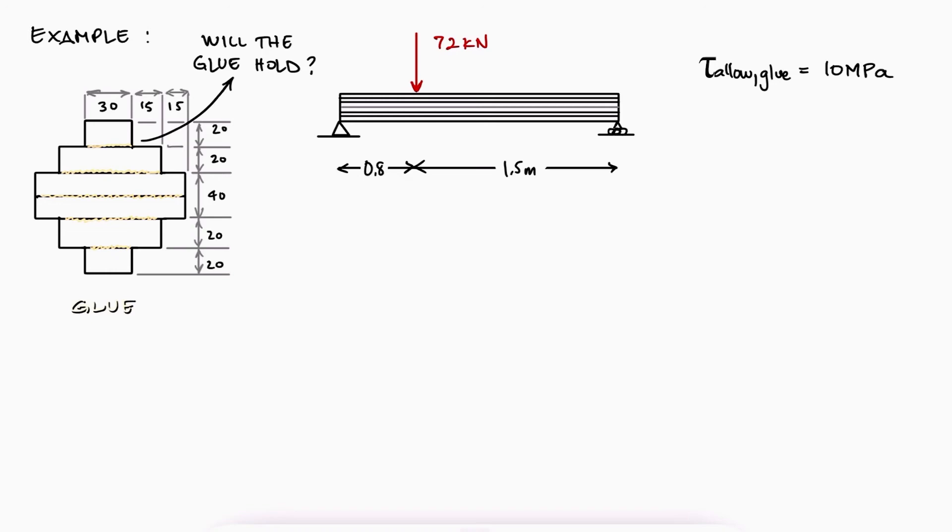To know if the glue will hold, we will calculate the transverse shear stress at the location of interest, which in this case is the location of the glue between the top plank and the remainder of the beam, and if the stress is higher than the allowable shearing stress of the glue, we know it would fail.